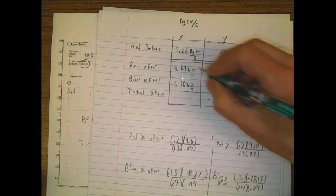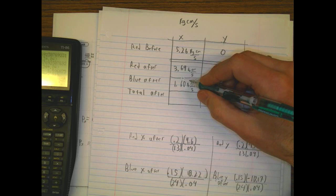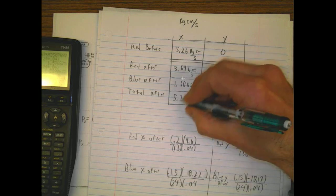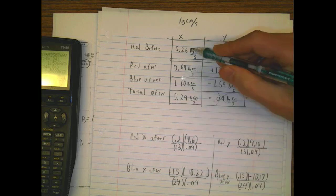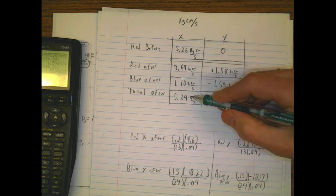Let's add these guys up here. 1.6 plus 3.69. I get 5.29 kilogram centimeters. So now, it was this, now it's this. That's really pretty close.